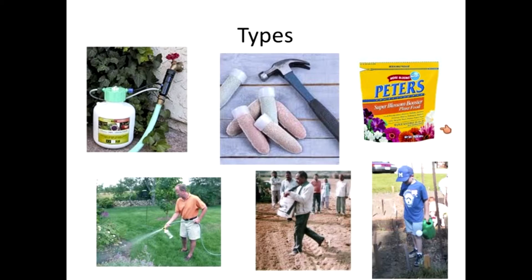The Peters Super Blossom Booster on the far right is a soluble fertilizer — I imagine it's a very high phosphorus level. Soluble fertilizers are dissolved in water and the plant is then watered with it at the base of the plant. Starter fertilizers are done this way, as the little boy with his watering can is demonstrating. The middle picture on the bottom shows broadcast fertilizer: a gentleman with a five-gallon bucket of fertilizer, broadcasting handfuls over the garden surface, which can then be worked in as pre-plant fertilizer.